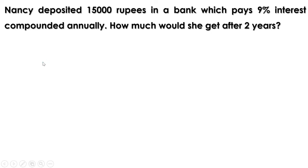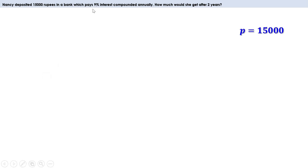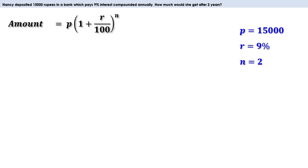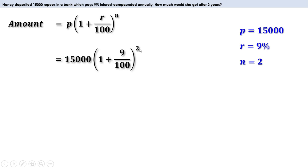First problem: Nancy deposited 15,000 rupees in a bank which pays 9% interest compounded annually. How much would she get after 2 years? The amount deposited P is 15,000, rate of interest R is 9%, and N is 2. Amount after N years is P × (1 + R/100)^N, so we write 15,000 × (1 + 9/100) all squared.